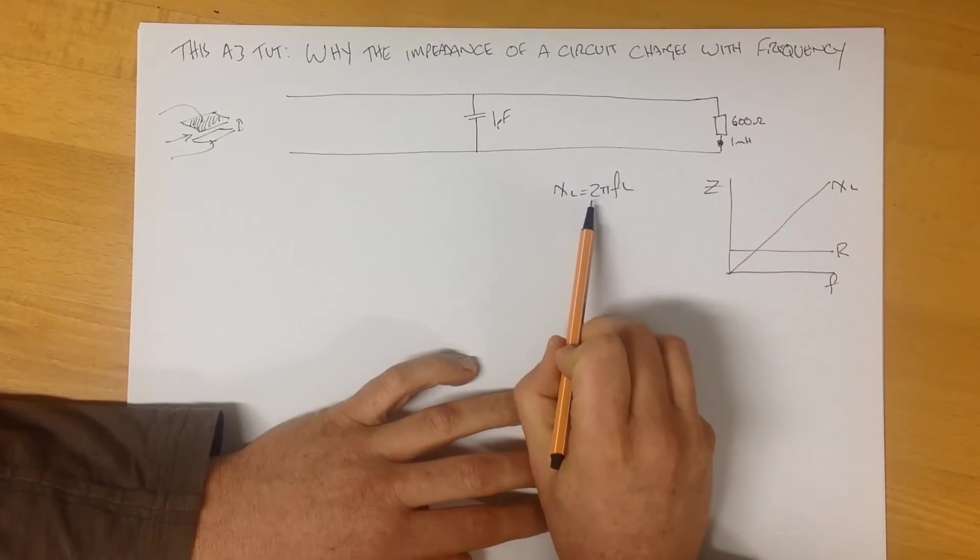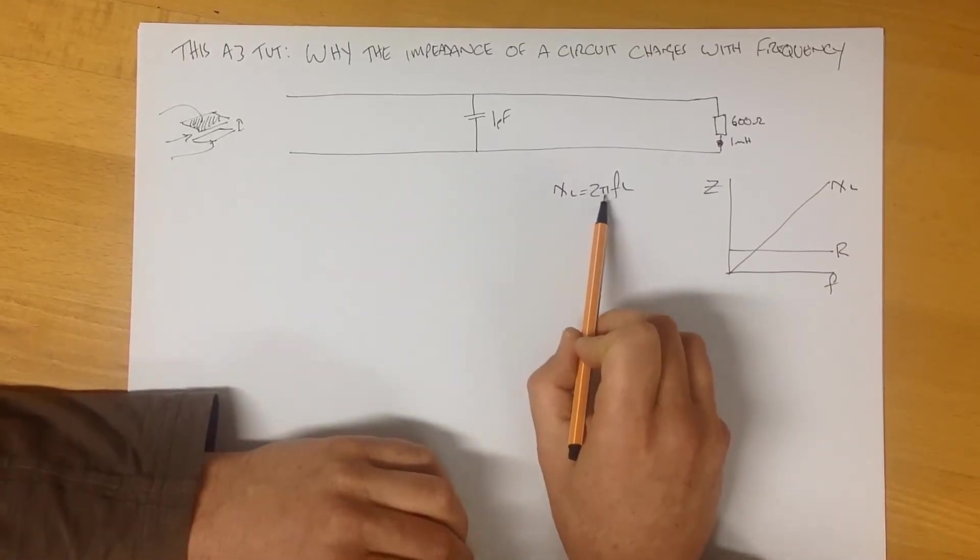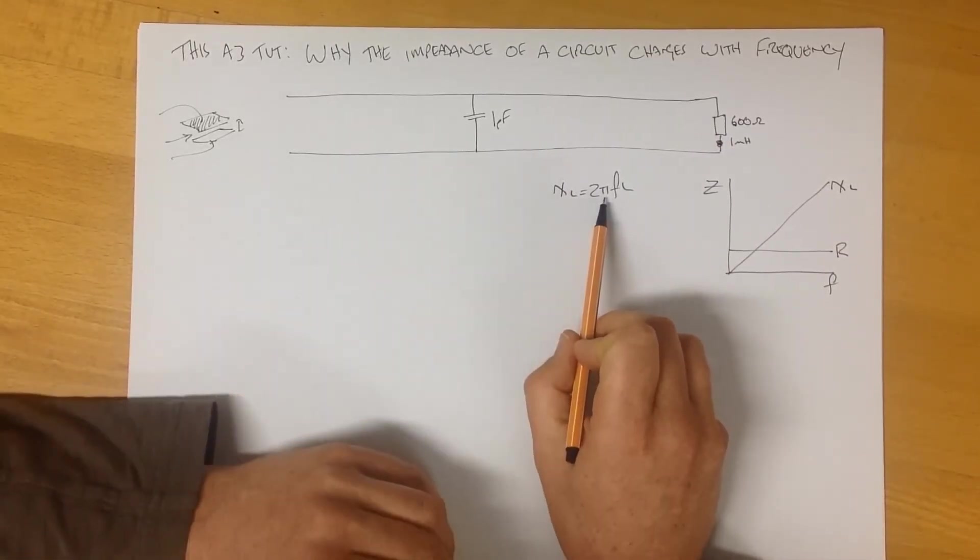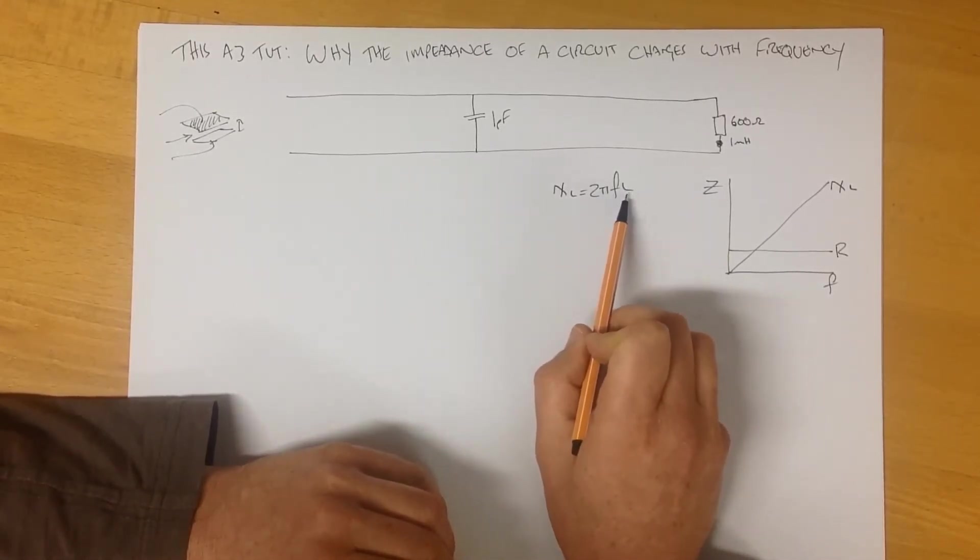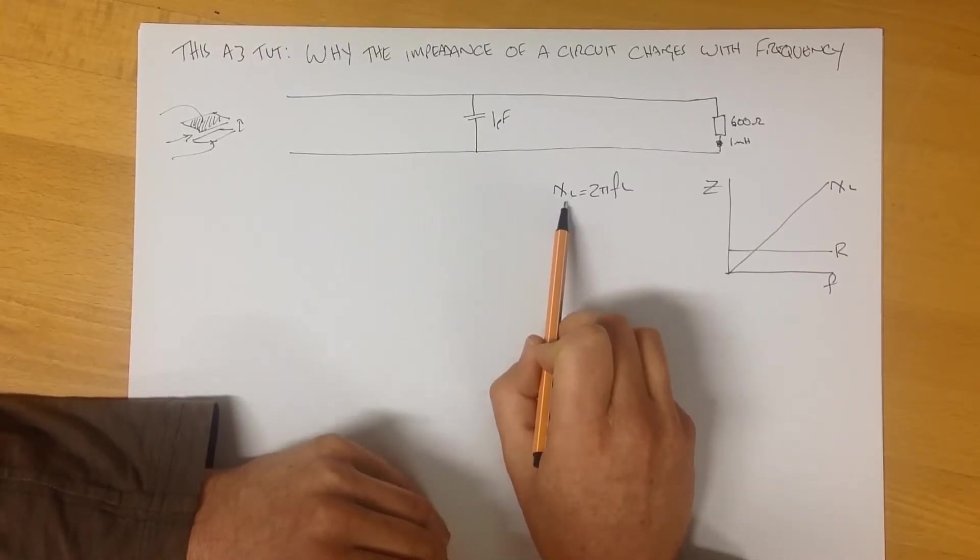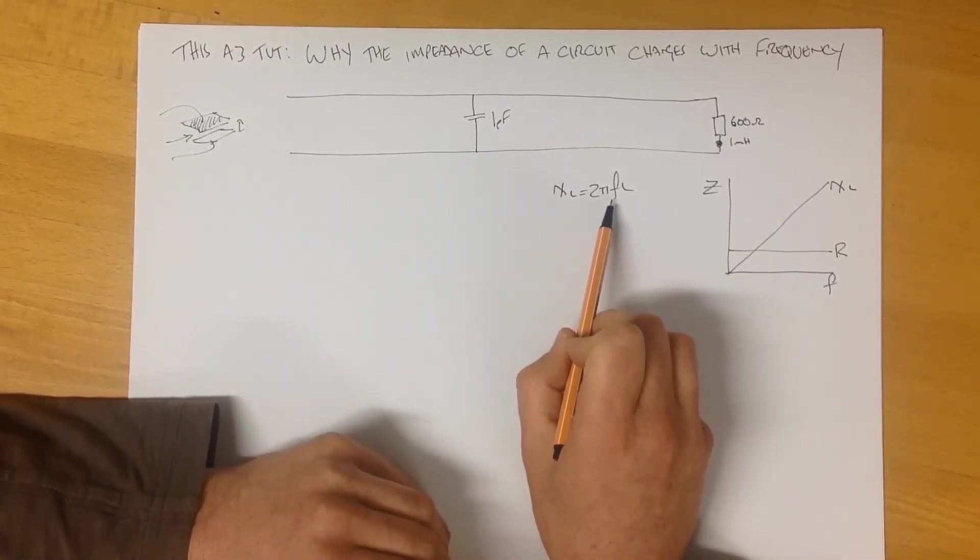We know that the inductive reactance does change with frequency, and it is a linear relationship. And that relationship is expressed by the equation 2πfL. So here we have the value of 2, which doesn't change, the value of π, which again doesn't change, the frequency which does, and our inductance which doesn't. So our inductive reactance is directly proportional to our change of frequency.